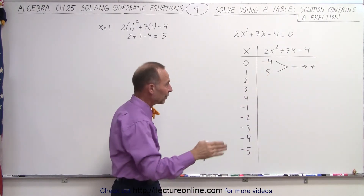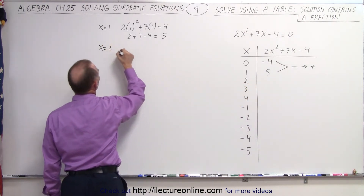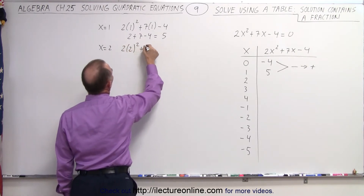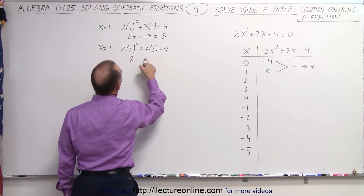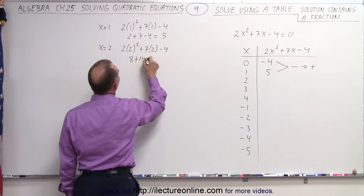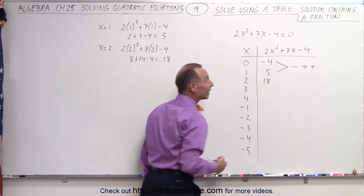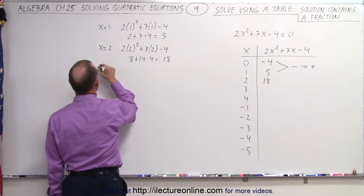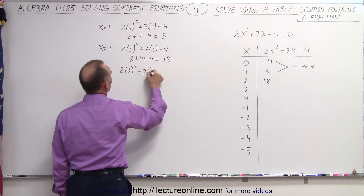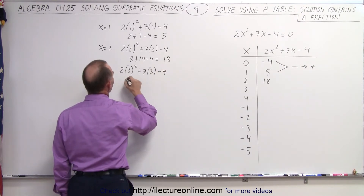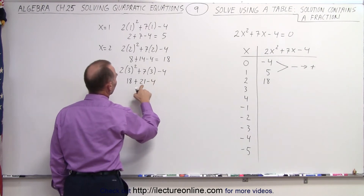We're going to ignore that for now and continue. When x=2, we have 2 times 2 squared plus 7 times 2 minus 4, that's 4 times 2 which is 8, plus 14 minus 4, equal to 18. And when x=3, we get 2 times 3 squared plus 7 times 3 minus 4, so that gives us 18 plus 21 minus 4, which is 35.